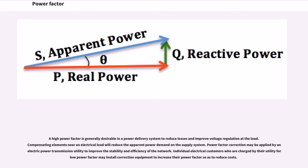A high power factor is generally desirable in a power delivery system to reduce losses and improve voltage regulation of the load. Compensating elements near an electrical load will reduce the apparent power demand on the supply system. Power factor correction may be applied by an electric power transmission utility to improve the stability and efficiency of the network. Individual electrical customers who are charged by their utility for low power factor may install correction equipment to increase their power factor so as to reduce costs.